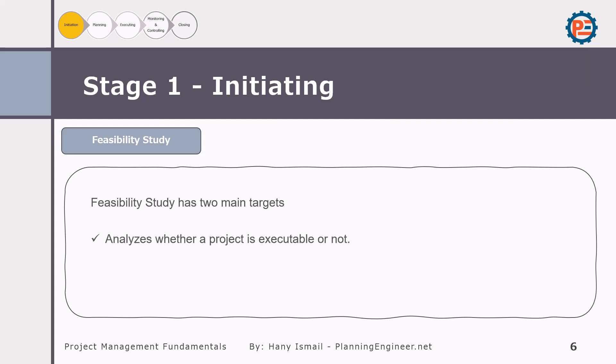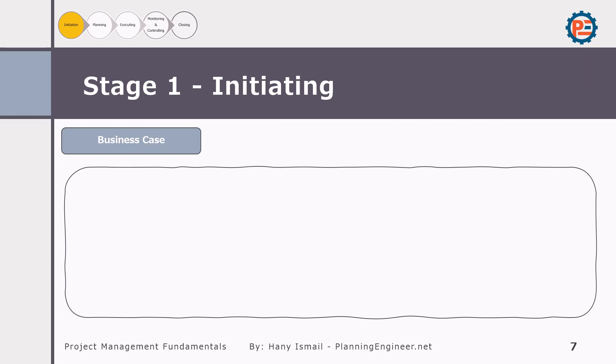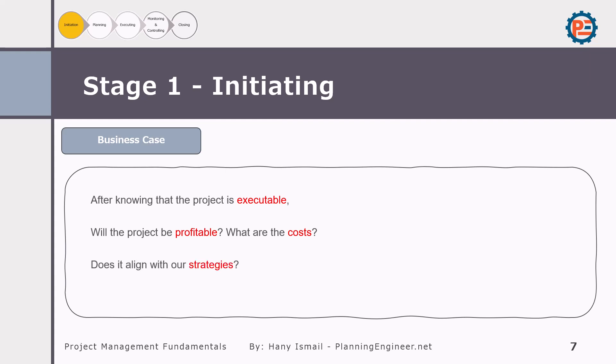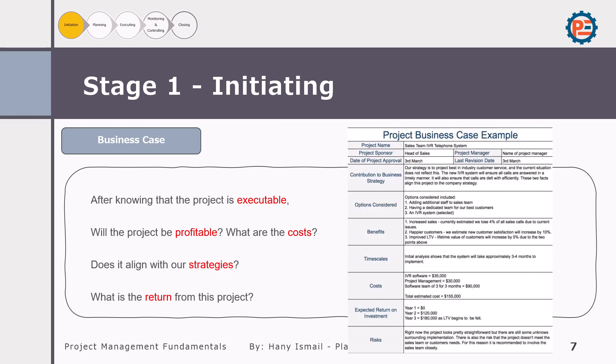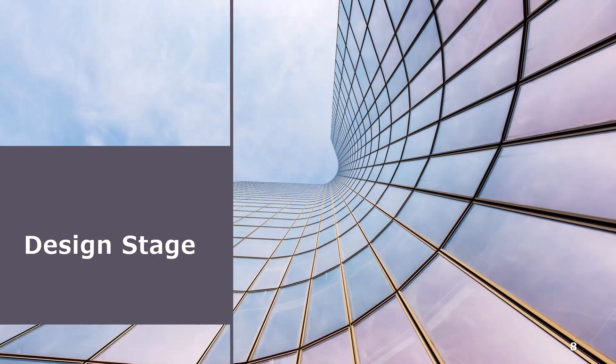By carefully analyzing the feasibility, you can avoid costly mistakes and lead the project to success. After confirming that the project is feasible, the next step is to develop a business case. The business case addresses additional questions: will the project be profitable, what are the costs involved, does the project align with our overall strategy, and what is the expected return?